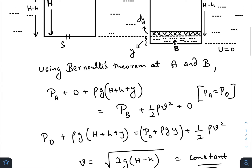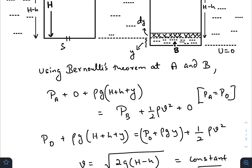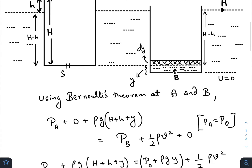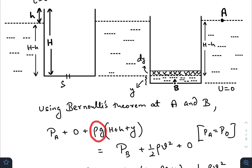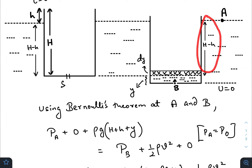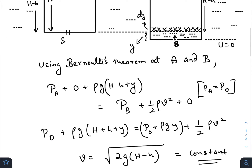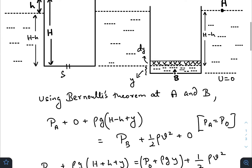Bernoulli's theorem states that the sum of the pressure head, potential energy head, and kinetic energy head remains constant for streamline flow at any two points. At point A, the pressure is atmospheric pressure P₀. The level of the outer liquid does not change, so kinetic energy head is zero. Taking this line as the reference for gravitational potential energy, the potential energy head at A is ρg(H − h + y).